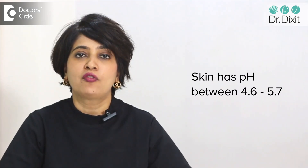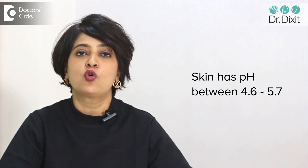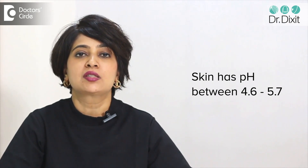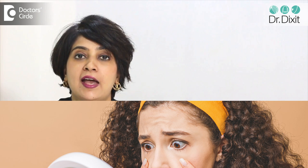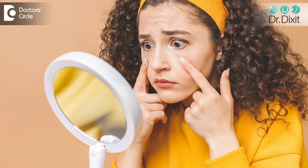The skin has a pH of between 4.6 to 5.7. What does this mean? That this natural tendency of the skin needs to be acidic.